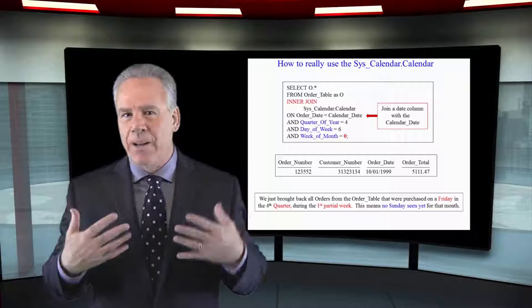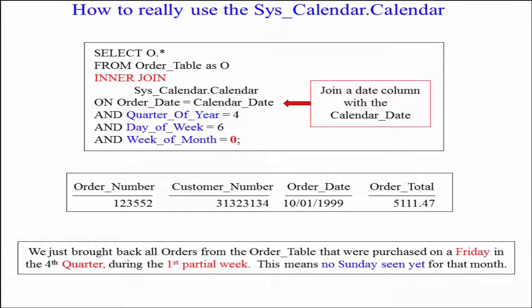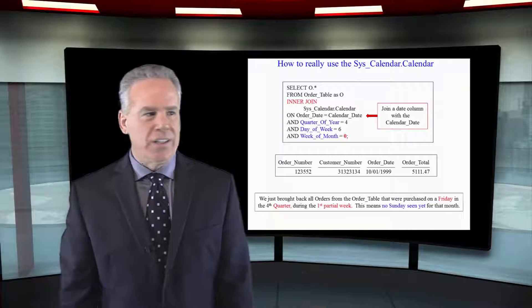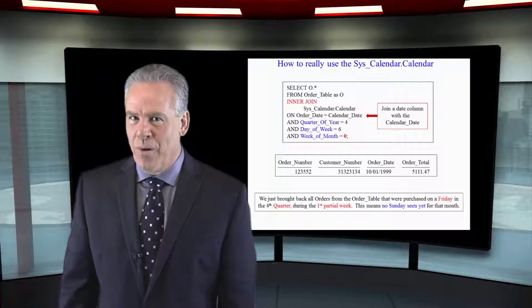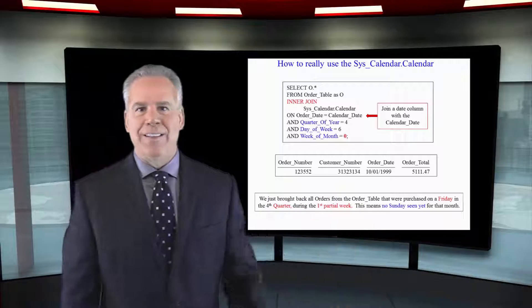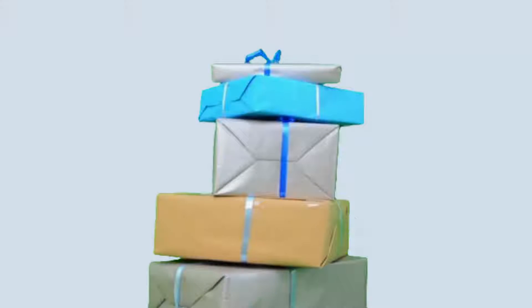This is exactly the way I want you to think about using the system calendar. I'm going to SELECT o.* FROM the order table AS o, only bringing back all columns in the order table, not also the system calendar. So I'll inner join that with the system calendar ON order_date = calendar_date. Now each order is going to join with the system calendar on that order date, and I can then say: WHERE quarter_of_year = 4 AND day_of_week = 6 AND week_of_month = 0, which means no Sunday has yet been seen. And as you can see, that's the order that met the specifications.